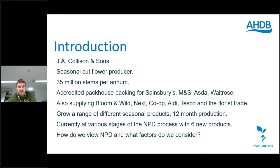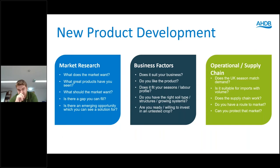We have a range of seasonal products but we do have 12-month production — there's always something going out the door. We're currently at various stages of the NPD process with around six new products. How do we view NPD and what factors do we consider? I've split it into three strands: market research, business factors, and operational and supply chain factors.